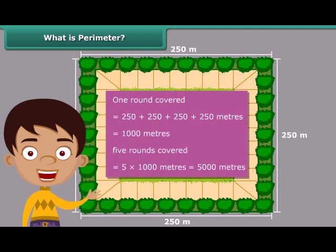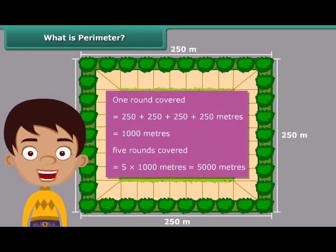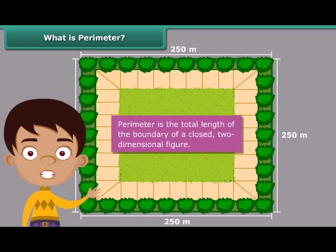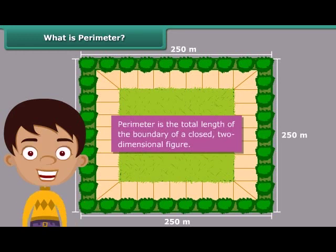In this calculation, we used the concept of perimeter when we worked out the distance you covered in one round. Perimeter is the total length of the boundary of a closed two-dimensional figure.